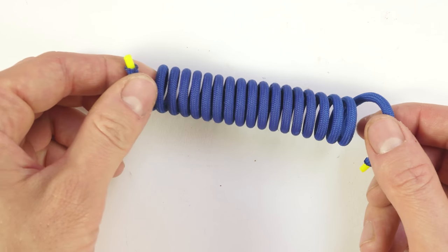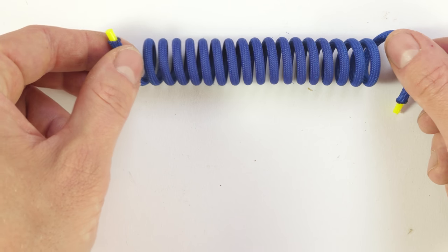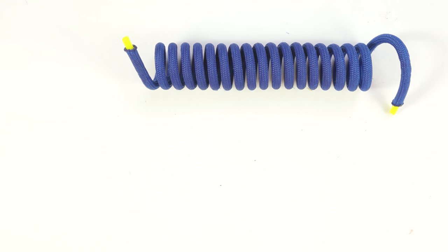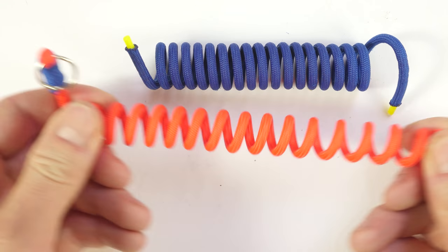Now, at this point, the lanyard, or the coil, is fairly loose. Now, you can use it like this, or you can reverse the coil, which is going to give it much more of a snap.